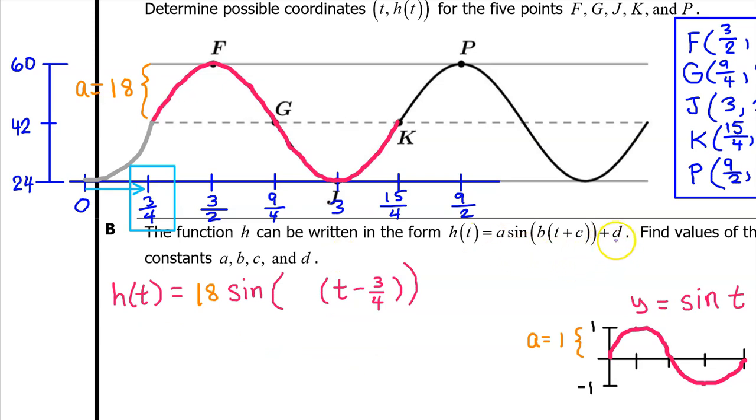The value of d reflects a vertical translation. So notice that the parent function has a midline right at zero, but h of t has a midline at 42. That means we can look at this as a vertical translation by 42. So the d value is 42. Now let's go back and find the value of b.